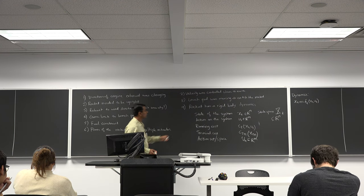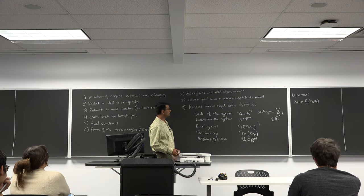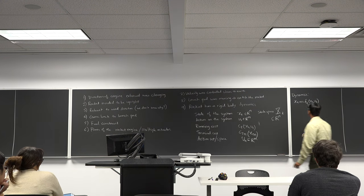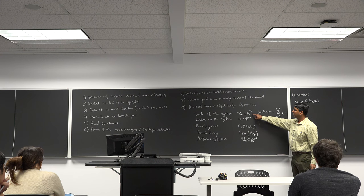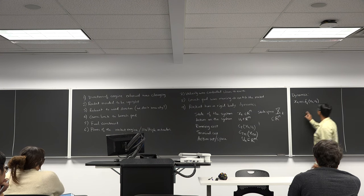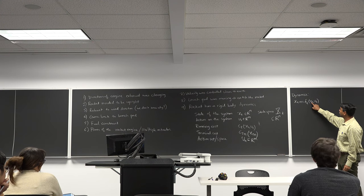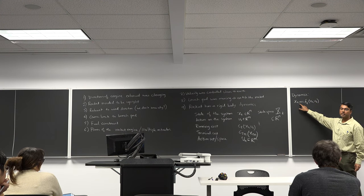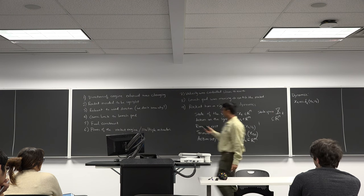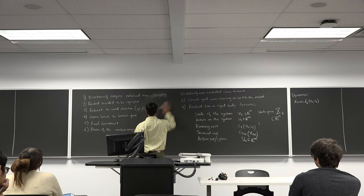Let's try to figure out what the state of the system is going to look like. The state of the system is defined as the minimum number of variables you need to keep track of such that, if you know those variables and what action you picked, you can predict the variables at the next point in time. It is the minimum number of variables.